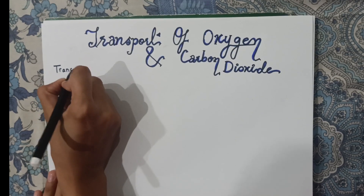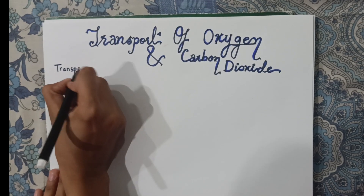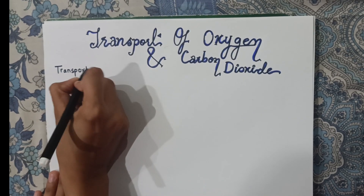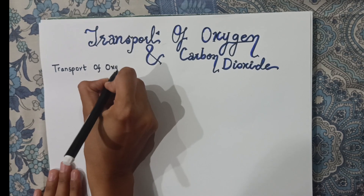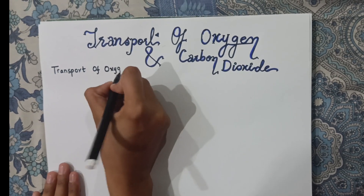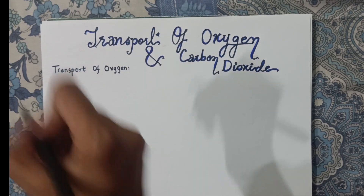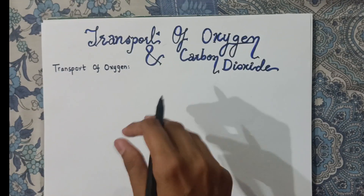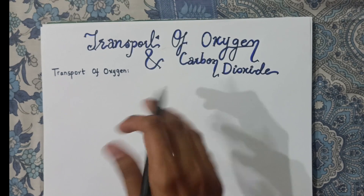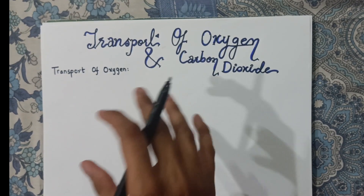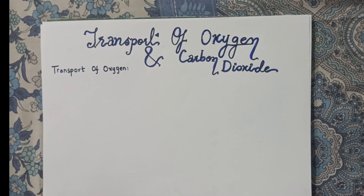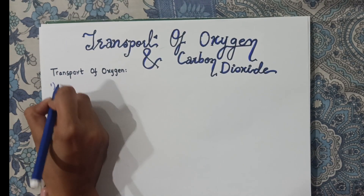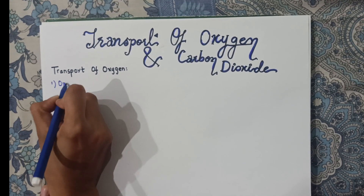Oxygen basically transports by two methods. One is a major method, which is via hemoglobin, and the other is a minor method, which is dissolved form. So first of all, let's start with the main method, that is transport in the form of oxyhemoglobin.